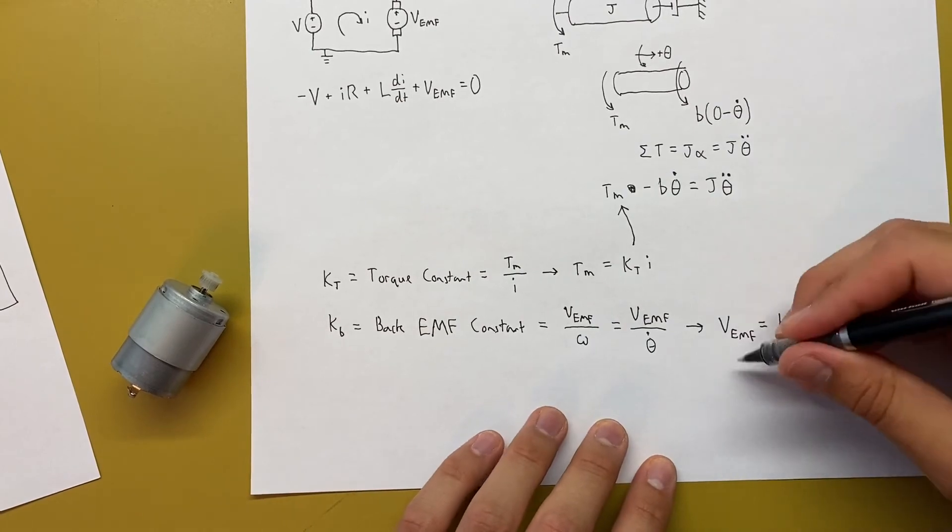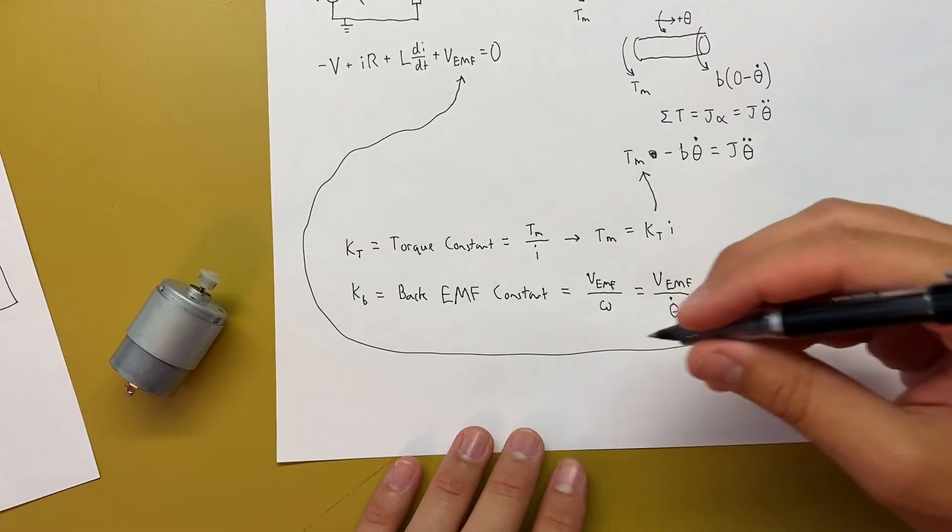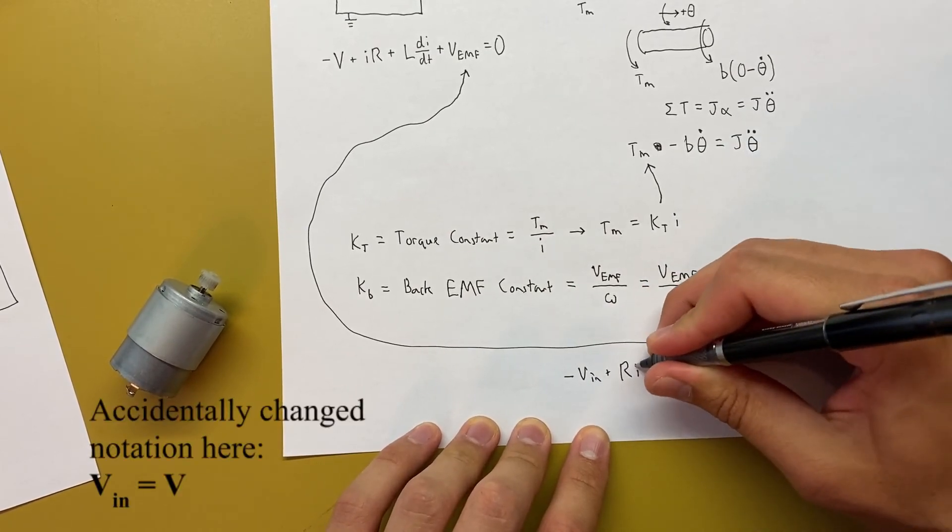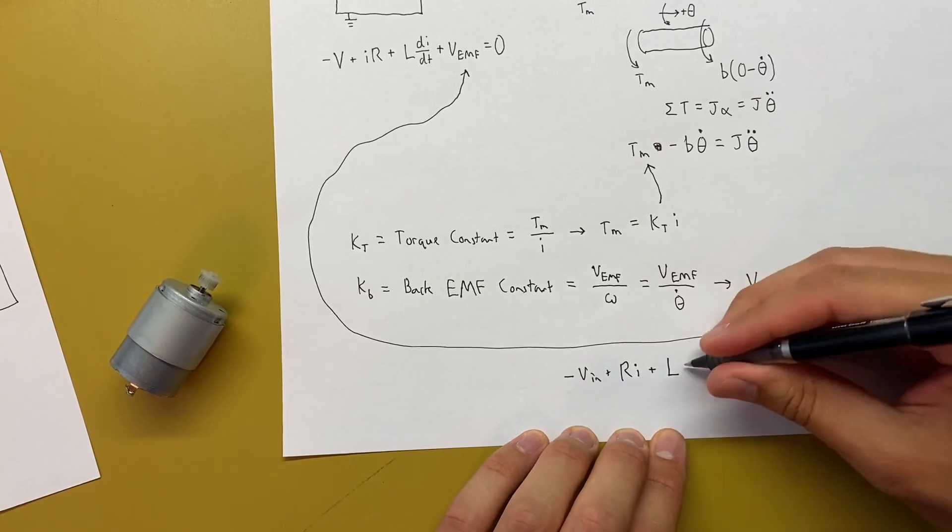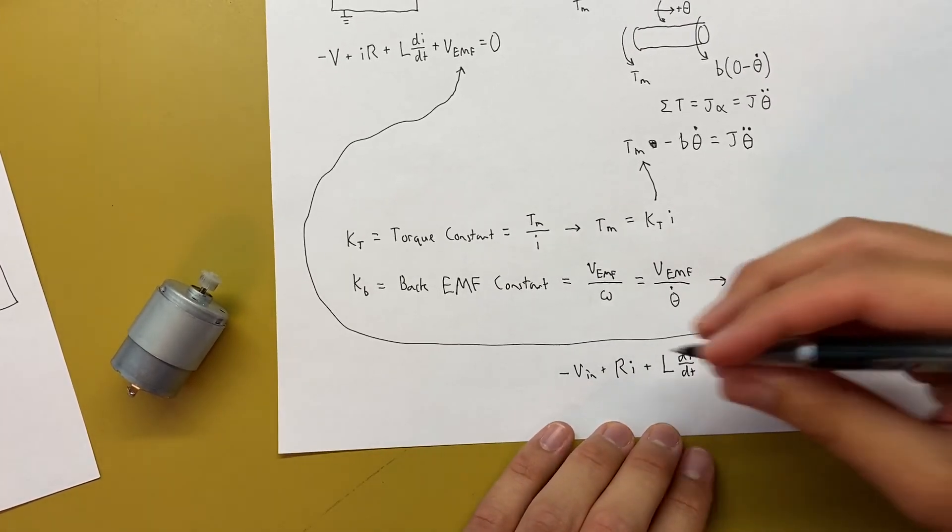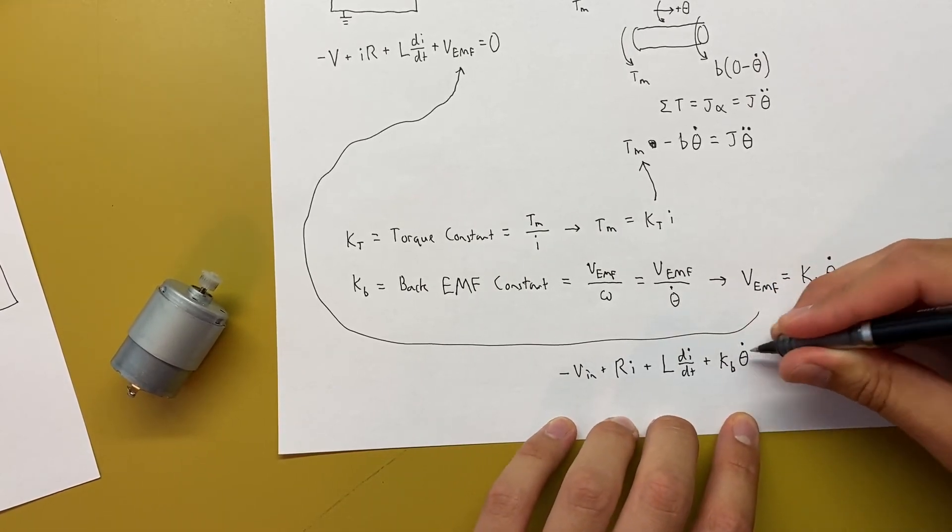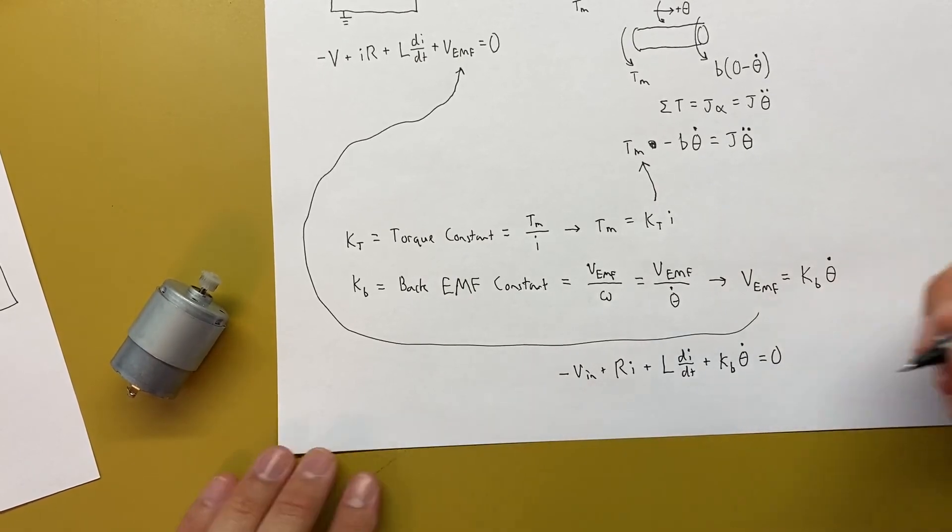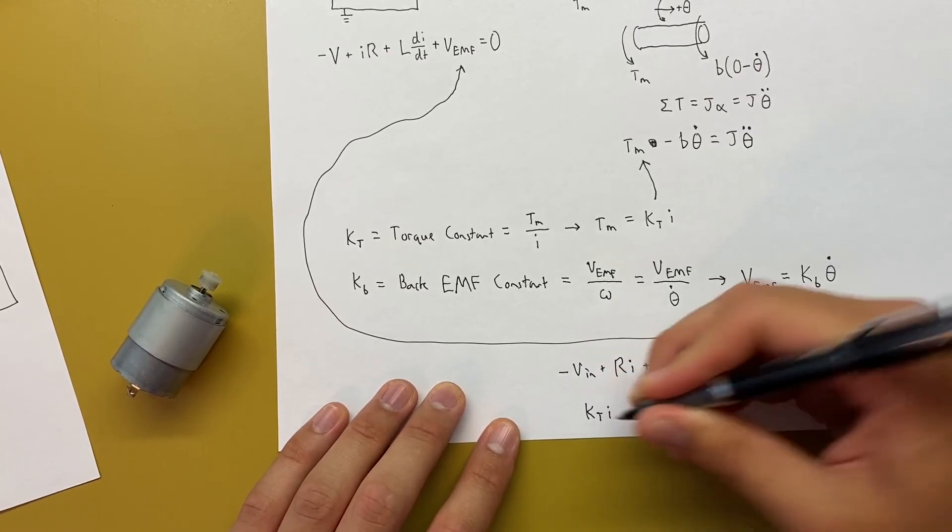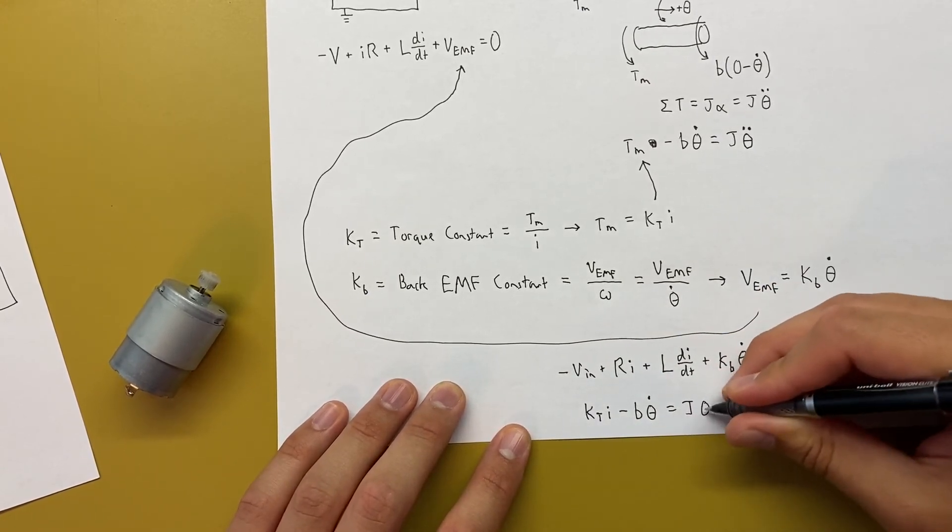So we can plug this one into there. And by plugging those in, we get these two equations. From the electric side, we get negative V plus RI plus L dI/dt, you can write I dot here as well, but it gets a little confusing with the two dots over the I, so I just leave it like this, plus KB theta dot equals to zero. And then the mechanical equation here, we've got KT I minus B theta dot equals to J theta double dot. And now we have these two equations.